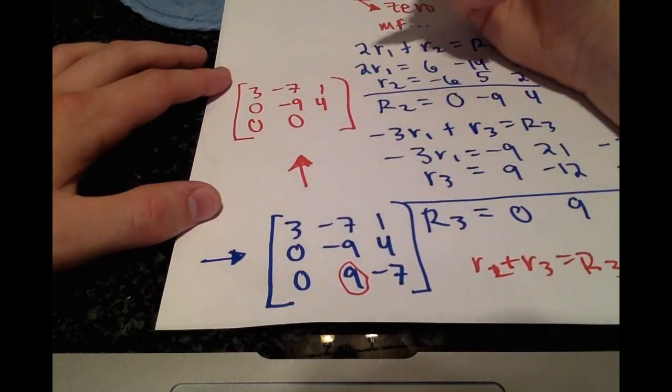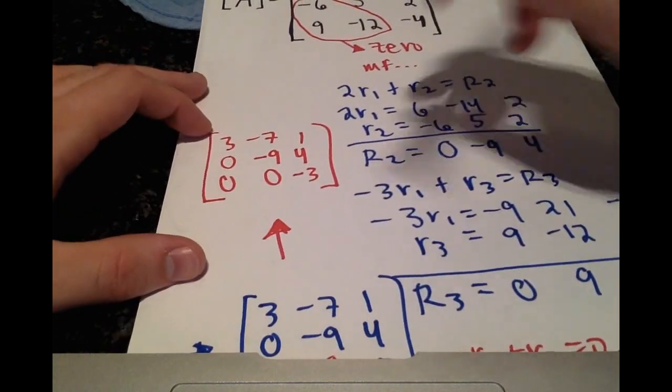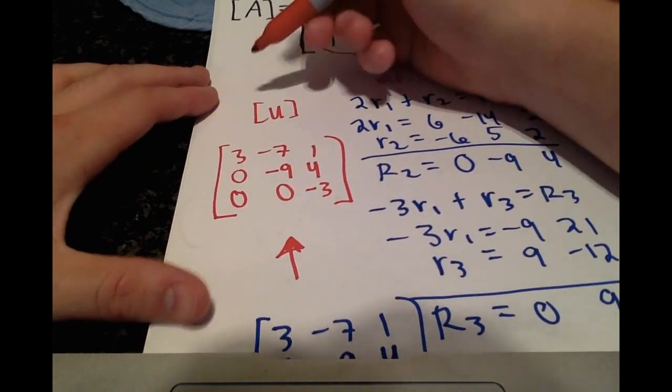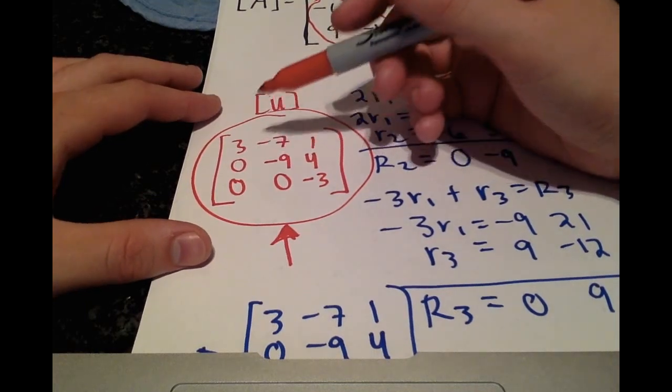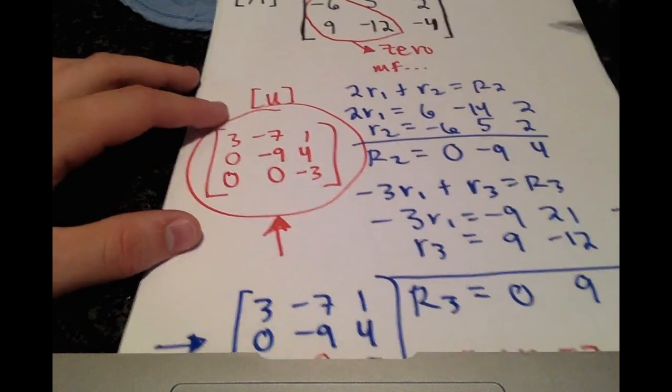And when you look at that, that is our upper matrix right here because it has just non-zero values along the diagonal and above and zero values below.